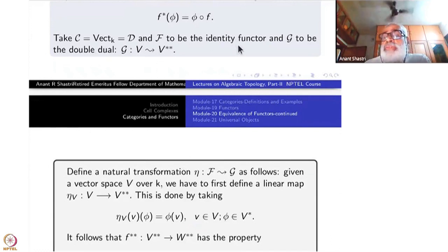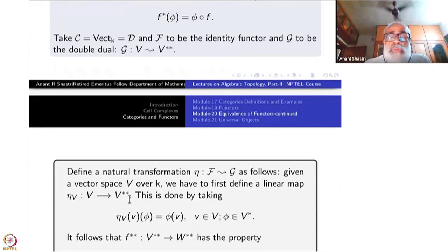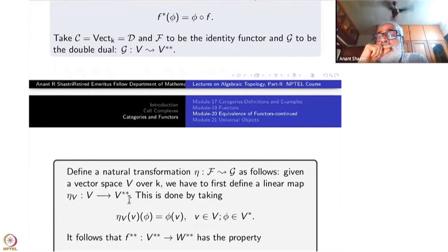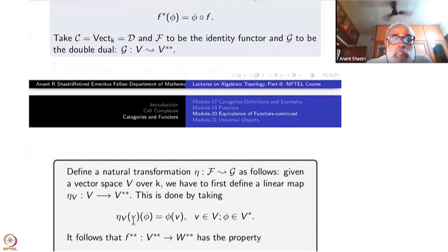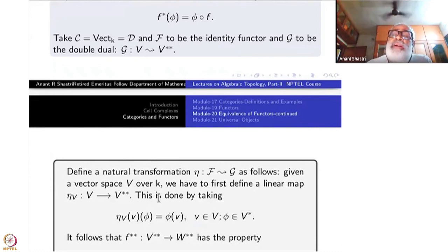Define eta from F to G as follows. Take a vector space V over k. We have to define a linear map eta_V from V to V double star — that is from F of V to G of V. So eta_V operating on a vector v must be a linear map on V star to k. It acts on a function phi, which is a linear map in V star, and we just take phi of v.